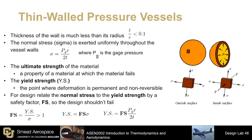First, we will assume that the thickness of the balloon is less than 10% of the radius. This assumption will allow us to apply thin-walled pressure vessel relationships, namely that the normal stress is given by the equation provided. This equation states that the stress, which has units of force per unit area,